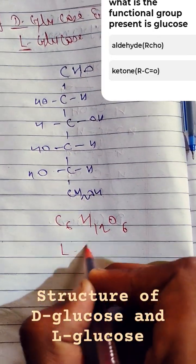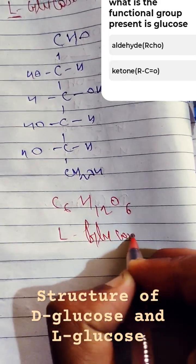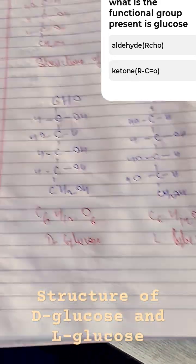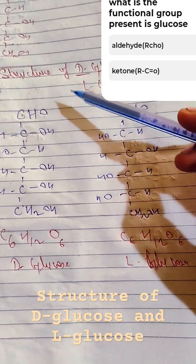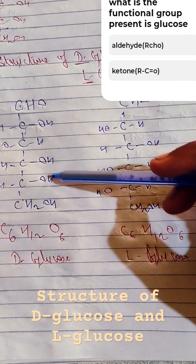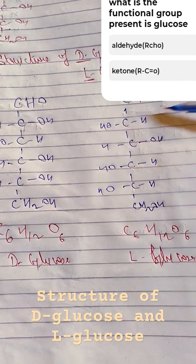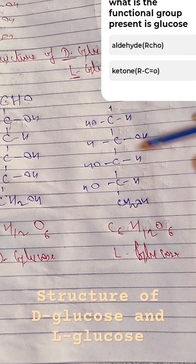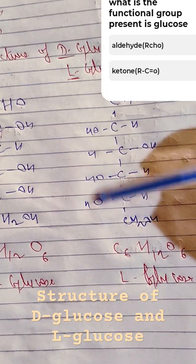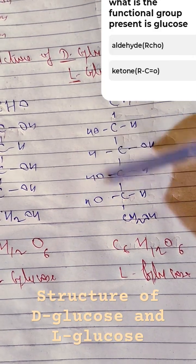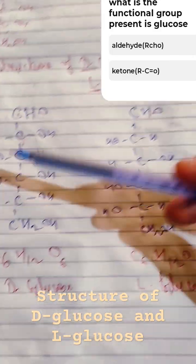So this is L-glucose. Do you find any changes? You can see, the OH is in the right side, that's why it's called dextrorotatory. Now you can see, the H is on the maximum right side, and OH here is in the left side, that's why it's called dextrorotator.